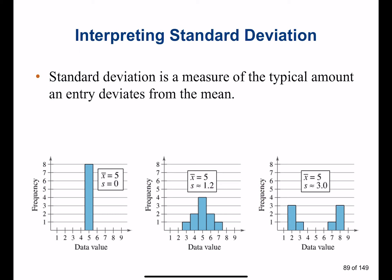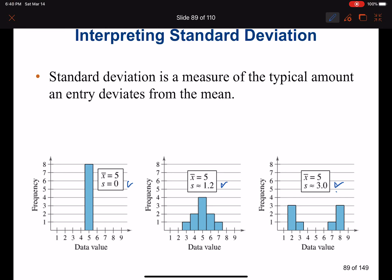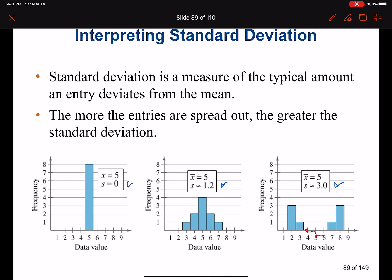Looking at the interpretation of standard deviation: when standard deviation is 3, the histogram has the widest spread; when it is 1.2, there is less spread from the average; and when standard deviation is 0, everything falls in one column with no spread at all.